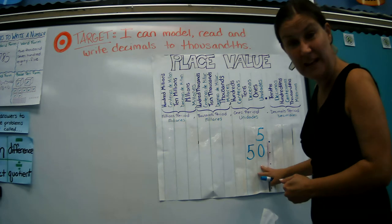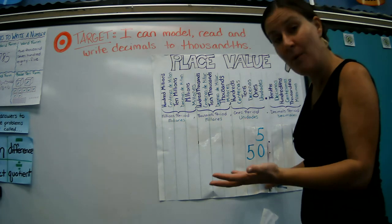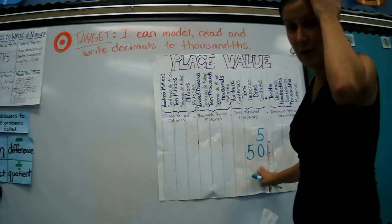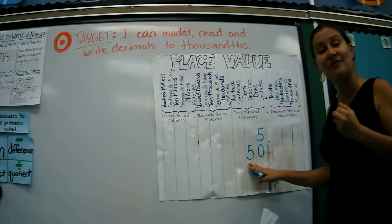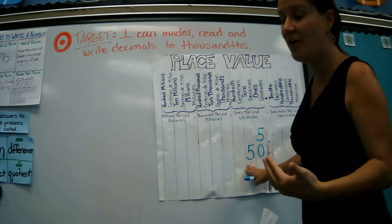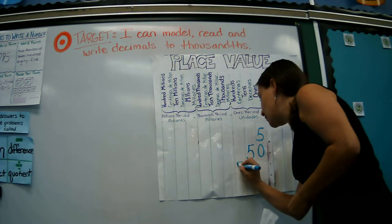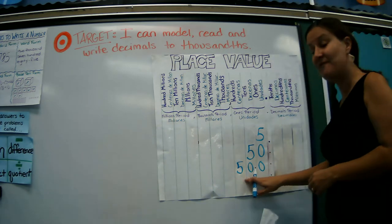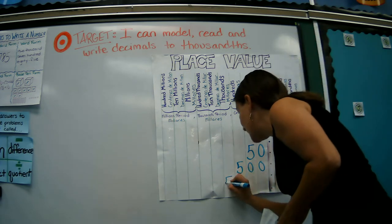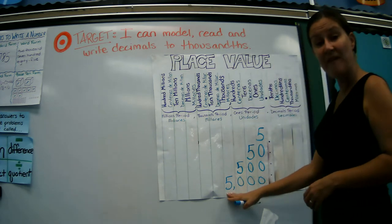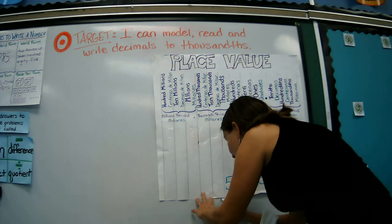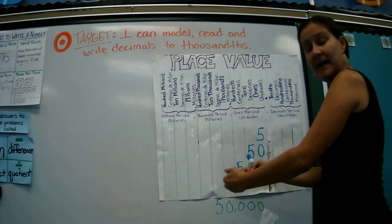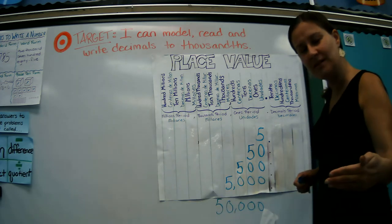And then if I take 50 and I multiply that by 10, now I'm going to have 10 groups of 50 — fifty, one hundred, one fifty, two hundred — it's going to keep going, and 10 groups of 50 is going to give me 500. The number moves up through the place value chart and gets bigger and bigger. If I multiply 500 times 10, that gives me 5,000. If I multiply 5,000 by 10, that gives me 50,000. Every time we multiply, it gets one place bigger on the place value chart.